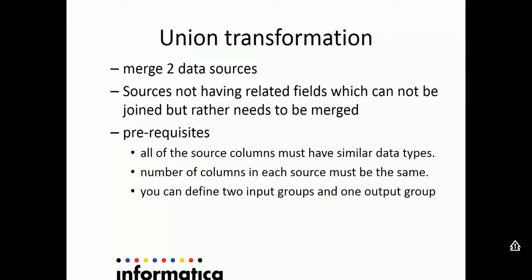The major feature of Union Transformation is to merge two data sources — sources that do not have related fields which cannot be joined, but rather need to be merged together. Some prerequisites of Union Transformation are: all source columns must have similar data types, the number of columns in each source must be the same, and you can define two input groups with one output group.